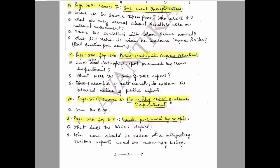Question 19: Page 370, Figure 13.16 — 'Police Clash with Congress Volunteers.' Questions: How were fortnightly reports prepared by the Home Department? What was the basis of these reports? Quoting the example of the Salt March, explain the biased nature of police reports.